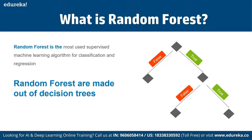As the name suggests, Random Forest randomly creates a forest with several trees. Generally, the more trees in the forest, the more robust the forest. Similarly, in a Random Forest classifier, the higher the number of trees, the greater the accuracy. In simple terms, Random Forest builds multiple decision trees and combines them to get a more accurate and stable prediction.